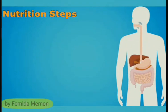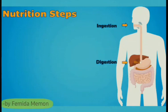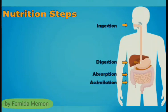Nutrition involves these steps. 1. Ingestion: food taken in from the mouth. 2. Digestion: the breaking of complex food to simpler form. Absorption: entering of digested food into our bloodstream. Assimilation: utilization of the absorbed food by the cells.